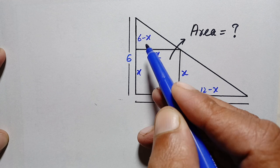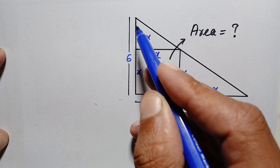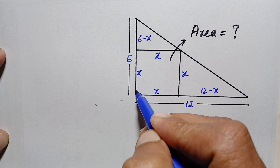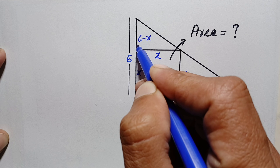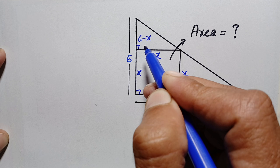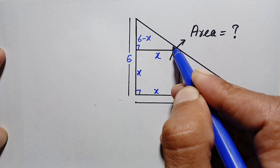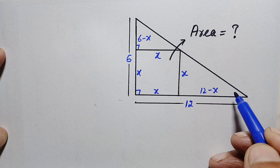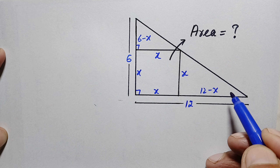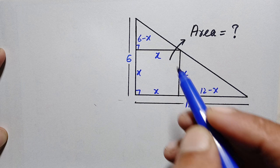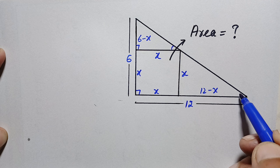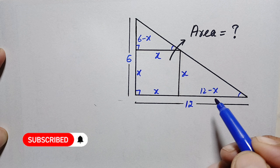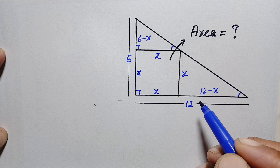Now look at this small triangle and this bigger triangle. The angles at these two points are right angles — 90 degrees. The angles at this point and at this point are also equal because they are corresponding angles. So by the Angle-Angle-Angle property, these two triangles are similar.